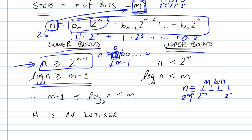You can fill all these bits and put them all to 1, but you can never reach 2 to the m. The most you can reach is 2 to the m minus 1. So here's our upper bound: n must be less than 2 to the m.